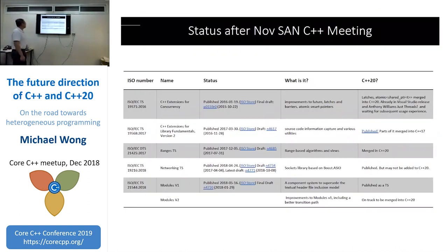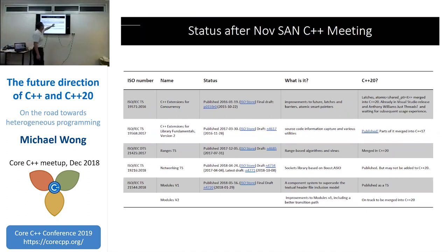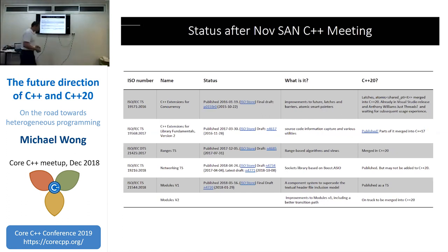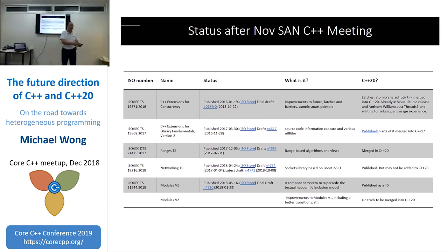After the San Diego meeting: concurrency TS has been around since January 2016. Out of that group, the things that made it in are latches, atomic shared pointer. We held back futures. This is where you would have gotten the dot-then continuation for futures. The concern was that this future — based on the Microsoft futures design — wasn't enough. It's fundamentally a single-consumer, single-producer future; we might want a multiple-producer, multiple-consumer future. That's why this is not moving into C++20.